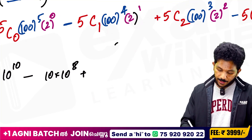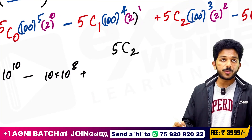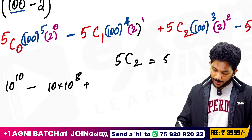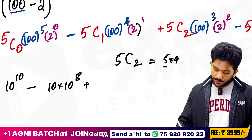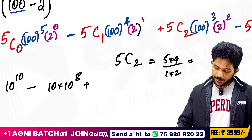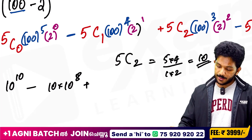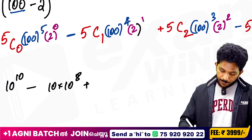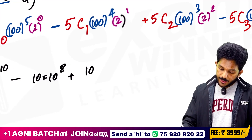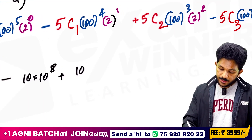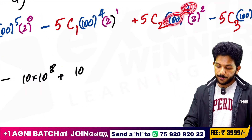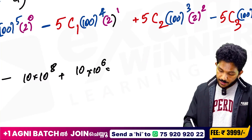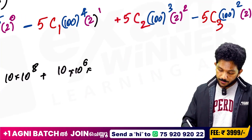5C2: we multiply the last number 5 by 4, giving 20, then over 2 is 10. So 5C2 is 10. 100 raised to 3 equals 10 raised to 6. 2 squared equals 4.